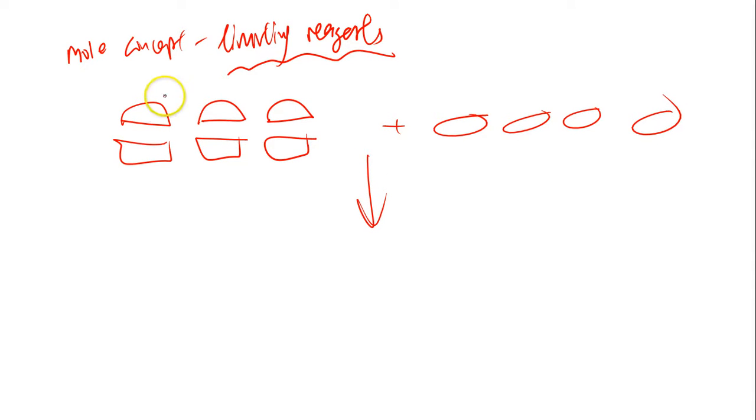So common sense would tell us that because you only have 3 burger breads, even though you have 4 patties, and if the condition is 1 patty per burger bread, you can actually only make 3 burgers. And you have 1 extra patty left behind.